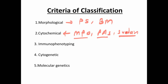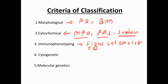Third is immunophenotyping by flow cytometry. There are proteins called cluster of differentiation (CD) markers. Myeloid series has CD13, CD33, CD11, CD7, MPO — always positive in myeloid. CD2, CD3, CD4, CD7 are positive in lymphoid series. Different CD markers are present on the surface, and with flow cytometry we detect them on the cell surface.